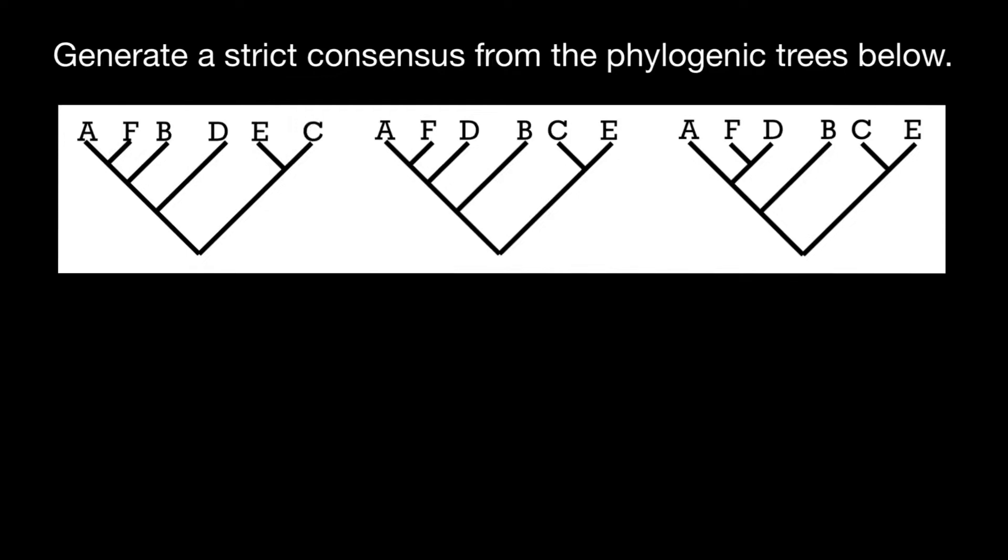Hello and welcome to Nikolai's genetics lessons and here is the question of the day. Generate a strict consensus from the phylogenic trees below. And as you see, all these three phylogenic trees are slightly different. What is the consensus?